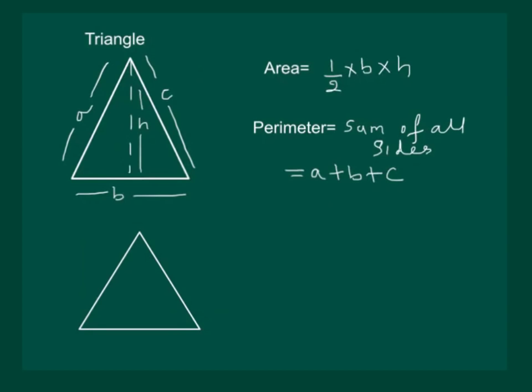Let us consider equilateral triangle, the length of whose sides be A. Then, since it is an equilateral triangle, length of all the sides will be A. And its area will be under root of 3 by 4 A square and its perimeter will be 3A.